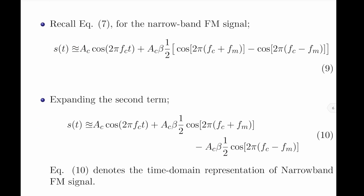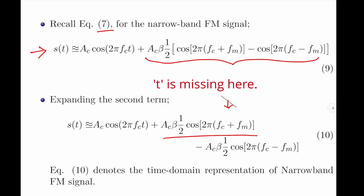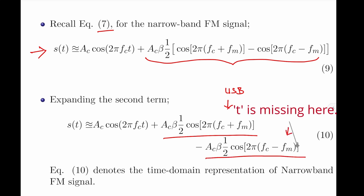Let me now plot the spectra for the narrow band frequency modulated signal by recalling equation 7. I will expand the terms in the second part of the RHS by multiplying ac·β·(1/2) to each term. This gives ac·β/4 · cos(2π(fc + fm)) for the upper sideband, and minus ac·β/4 · cos(2π(fc − fm)) for the lower sideband.